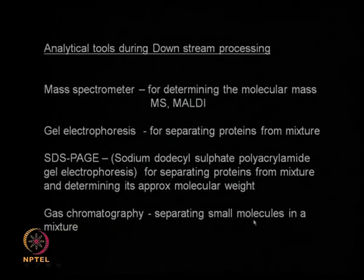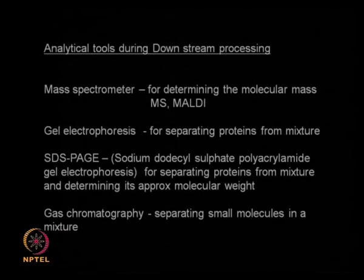Gas chromatography is good for separating and identifying small molecules in a mixture — specifically molecules that can be easily vaporized. You can find the composition of those components. It is not good for proteins; for protein mixtures you need HPLC. These are standard instruments found in any downstream lab, and without them you cannot do downstream processing for measuring, identifying, or quantifying proteins and metabolites — the small molecules that come out from a fermentation broth.